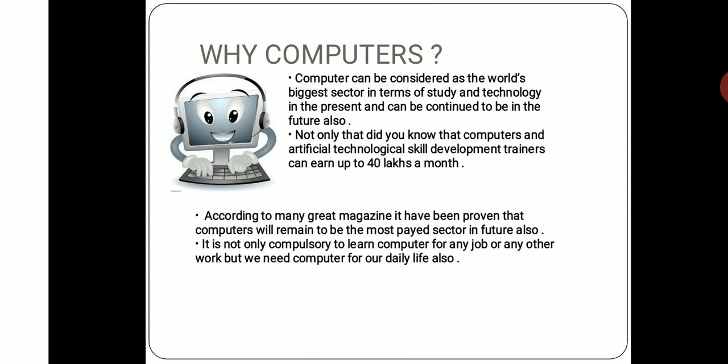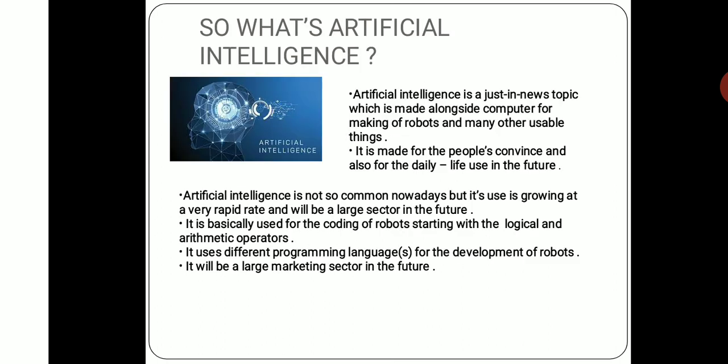Computer is now compulsory to learn for any job or any other work, and we need computer for daily life also. Artificial intelligence deals first of all with robots. Artificial intelligence is a new topic which is made alongside computers for making robots and many other accessible things. It is made for people's convenience and for daily life use in the future. It is not so common nowadays but it is growing at a very rapid rate on a large scale for the betterment of the future.